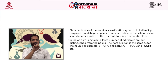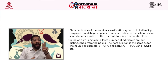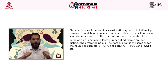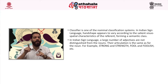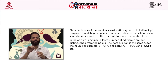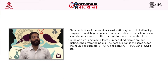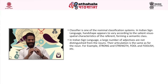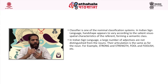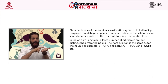Classifiers represent the visuospatial characteristics of the referent, forming a semantic class. There are 14 classifiers, of which 12 take physical properties of the referent and vary according to size, shape and textural appearance. Such classifiers that vary over size and shape are called size and shape specifiers in the sign language literature. In Indian Sign Language, a large number of adjectives are not distinguished from nouns — their articulation is the same. For example, strong and strength, fool and foolish, etc.